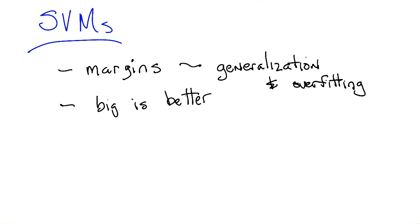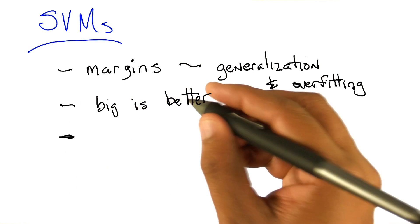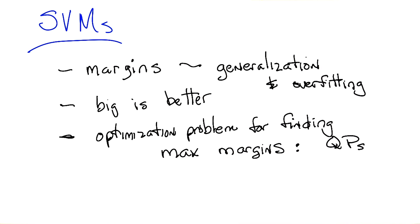Then we talked about how you could actually find a linear separator that has maximum margin. I think we turned it into a quadratic program? Yes. We found an optimization problem for refining maximum margins, and they turned out to be quadratic programming.